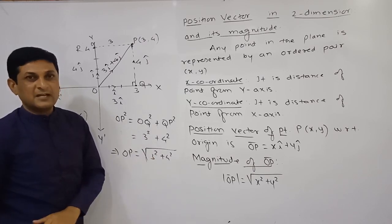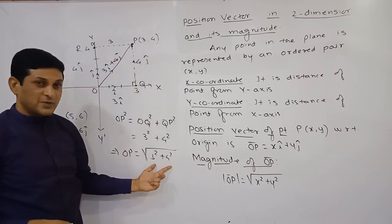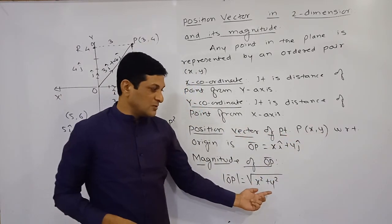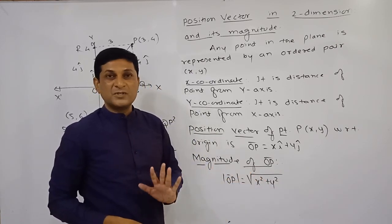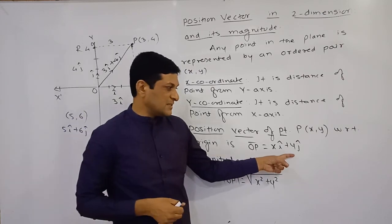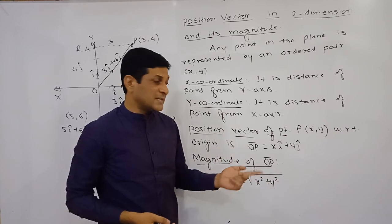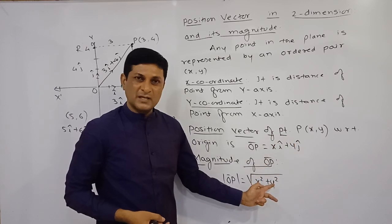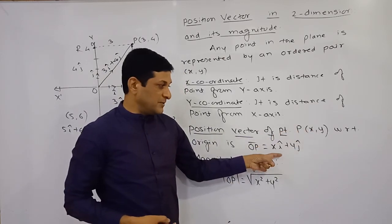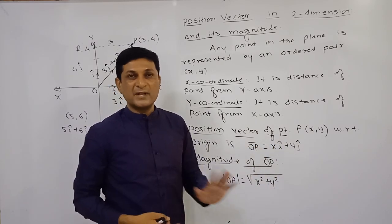We do not need to apply Pythagoras theorem every time. Once the position vector is given as xi-cap + yj-cap, the magnitude is simply √(x² + y²), where x is the coefficient of i-cap and y is the coefficient of j-cap. So if coordinates are (x, y), the position vector is xi-cap + yj-cap and its magnitude is √(x² + y²).